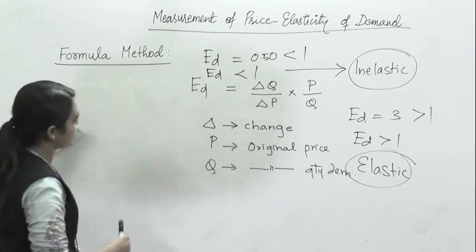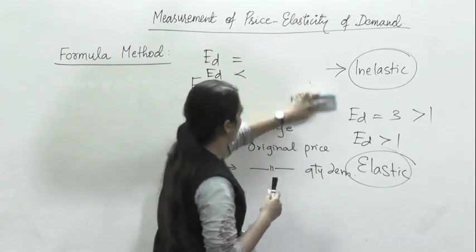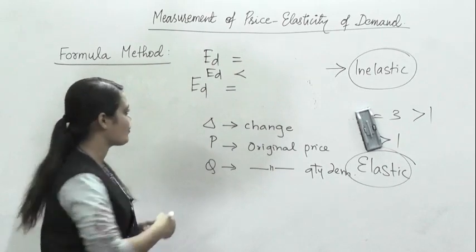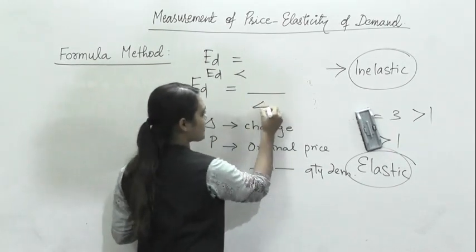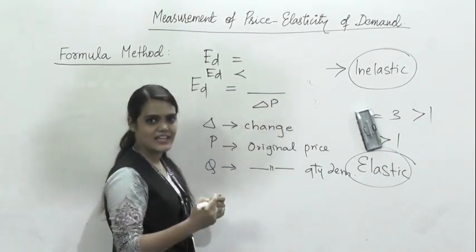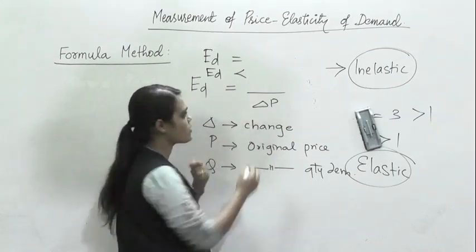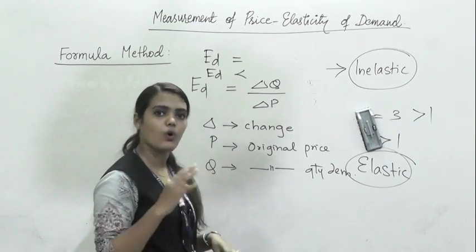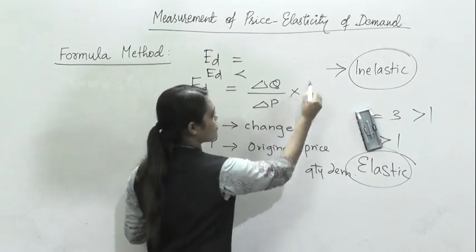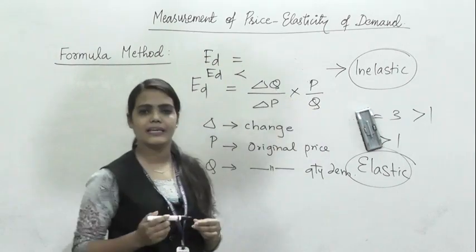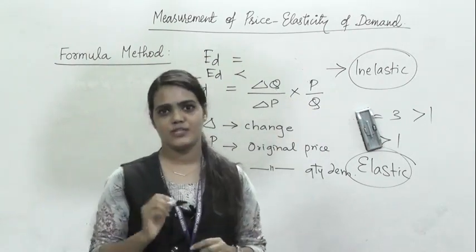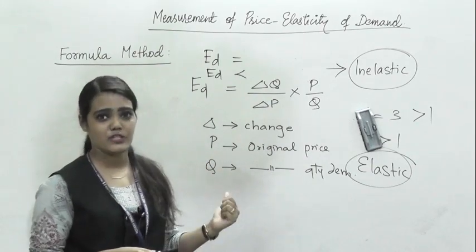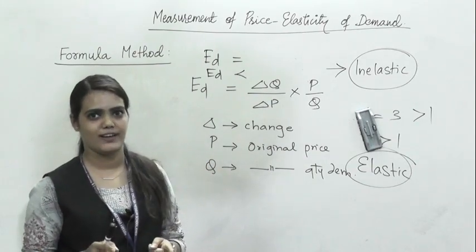Quick revision: in the formula method, the base is change in price, so you write ΔP in the denominator. Due to ΔP, what changes is ΔQ. But it is not an absolute value — it is always a relative value, so you multiply by P upon Q, where P is your original price and Q is your original quantity. Pause and write this formula down.